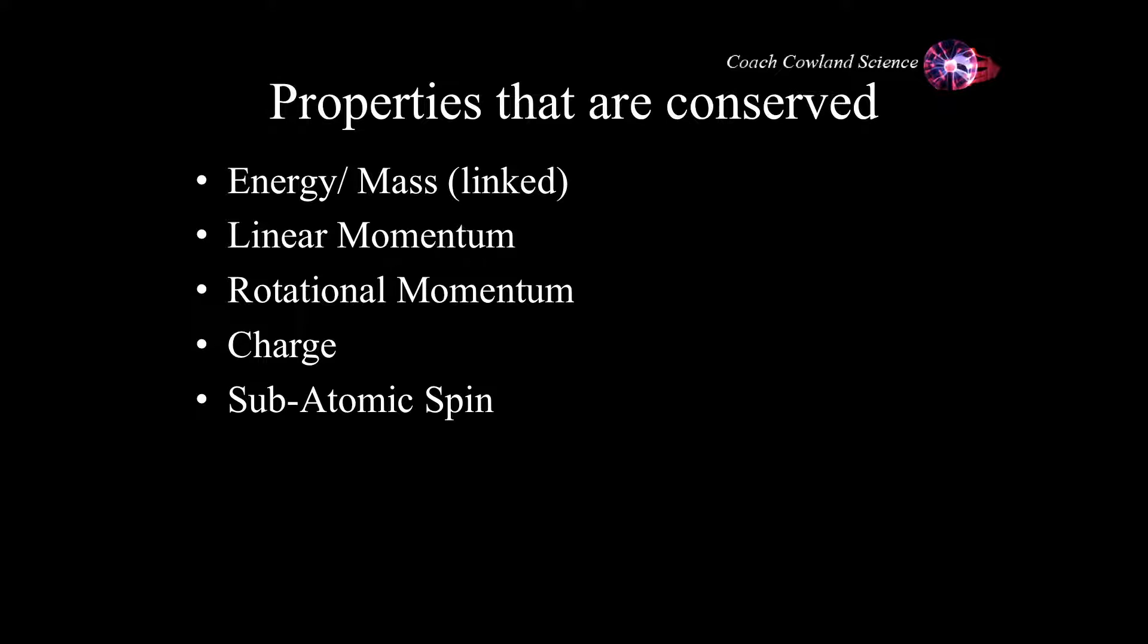There's a number of things that are conserved within what we call systems and we'll talk about what systems are in a couple of minutes. So energy and mass, they are linked and related, they can be conserved. Linear momentum, that is the way momentum happens. Whatever happens to the momentum of a system before anything happens has got to be the same as whatever happens to that linear momentum after.